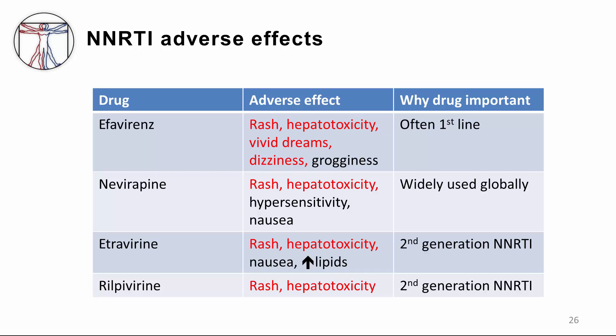With efavirenz, you can see rash, hepatotoxicity, and patients complain of vivid dreams, dizziness, and some psychiatric disorders which can be unmasked by efavirenz, as well as grogginess. Efavirenz is oftentimes a first-line drug, particularly if the patient hasn't had a history of psychiatric illness. Nevirapine is famous for causing rash and hepatotoxicity, particularly in women, and is used globally and very widely. Etravirine and rilpivirine are newer NNRTIs more robust towards resistance, with rash and hepatotoxicity as main toxicities.